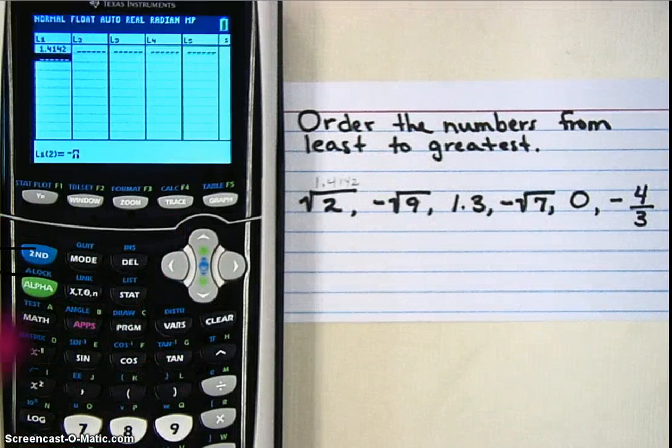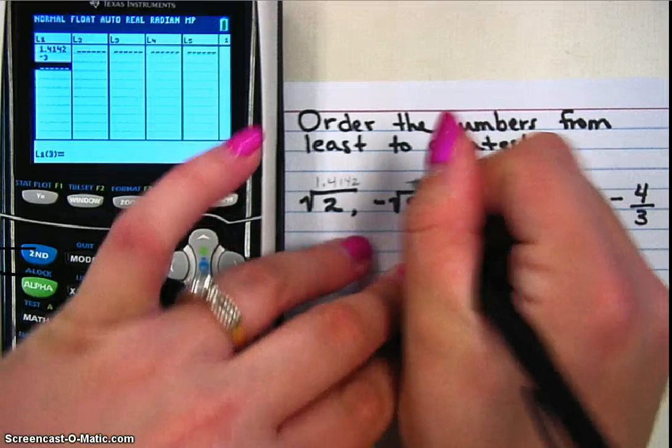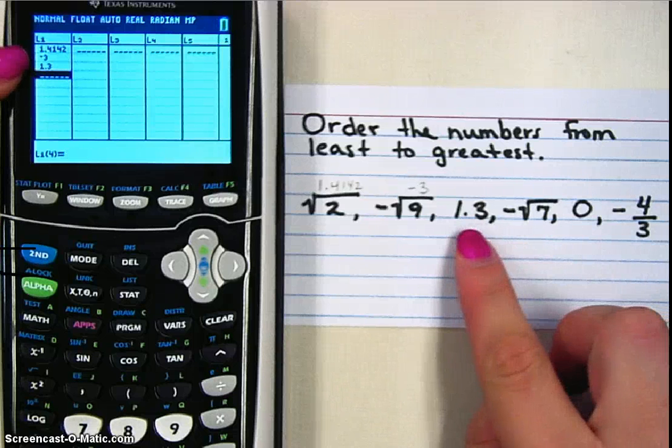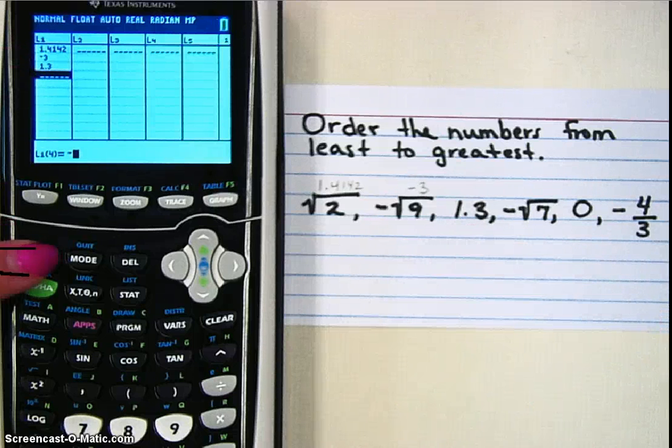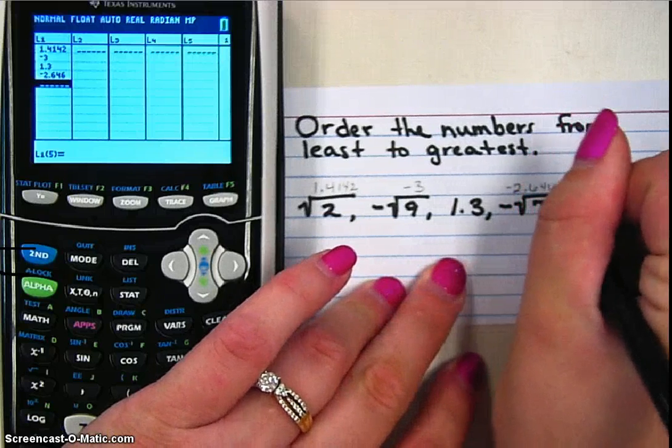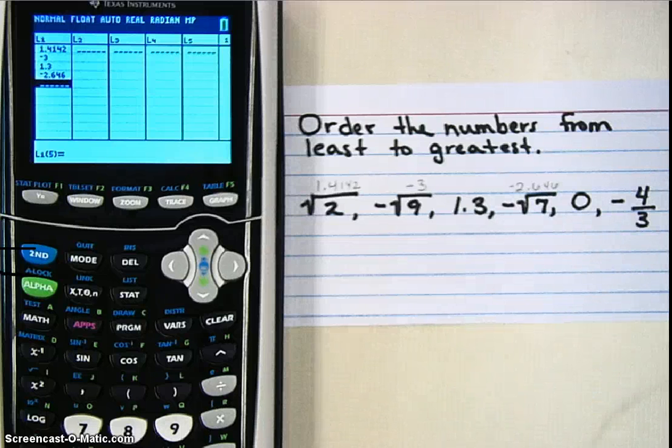Negative square root of 9 gave me negative 3. 1.3, I don't have to write that one down, it's already there. Negative square root of 7, which is negative 2.646. 0, and then negative 4 thirds.